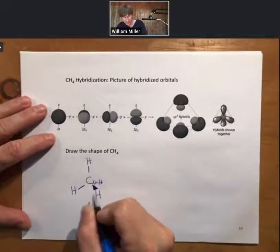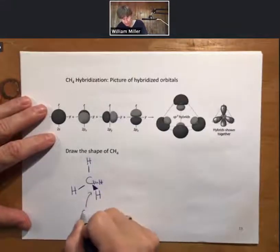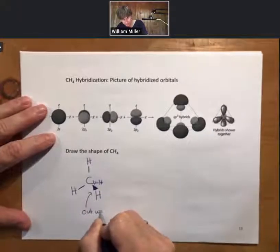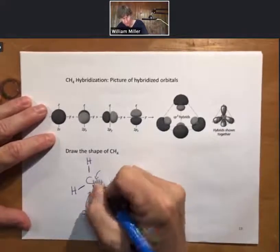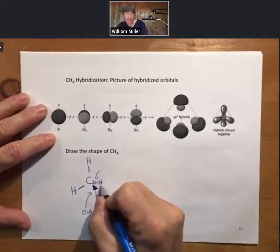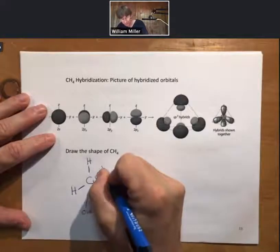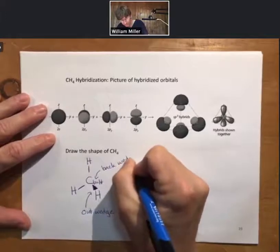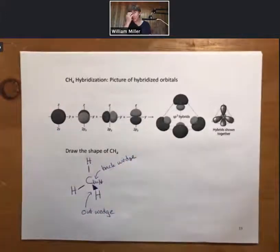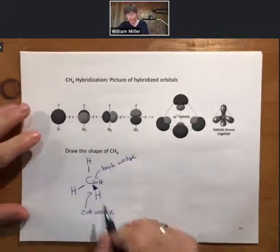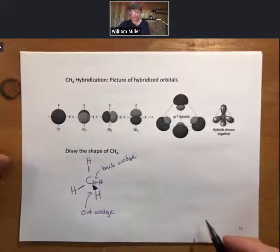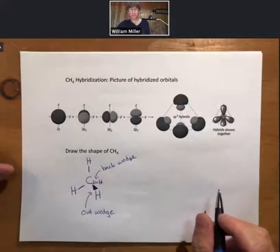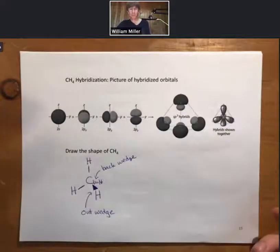The bond coming out at you is called an out wedge. The one going behind the page — meaning that H is behind the page — is called a back wedge, or in wedge. This is how we always draw the shape of a tetrahedral.